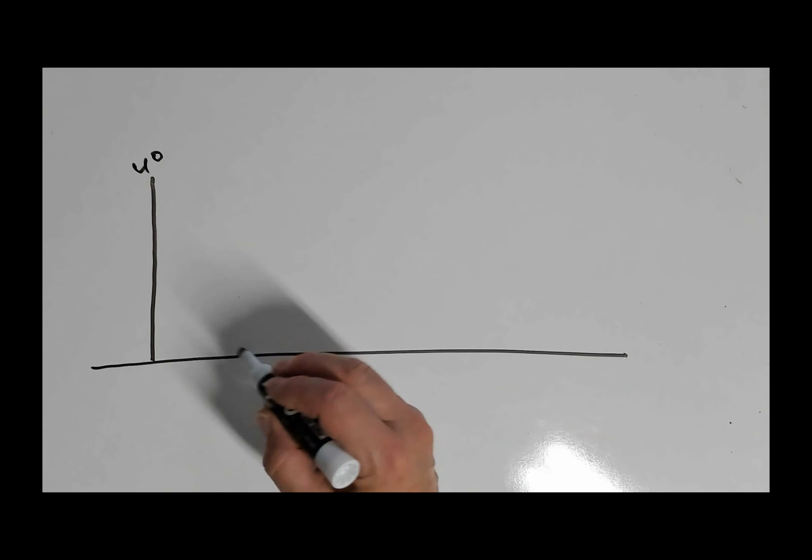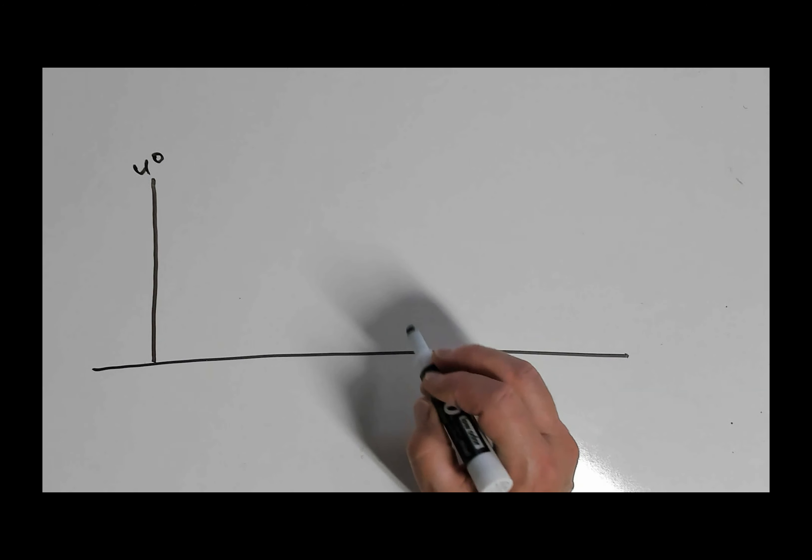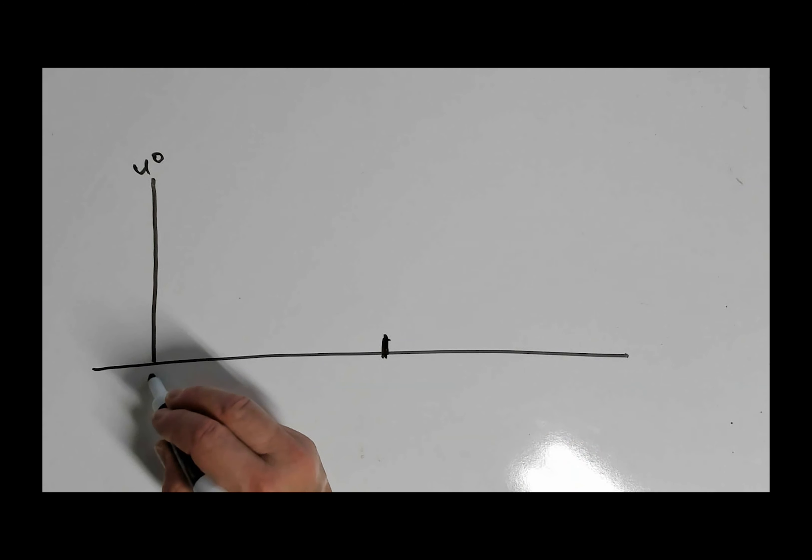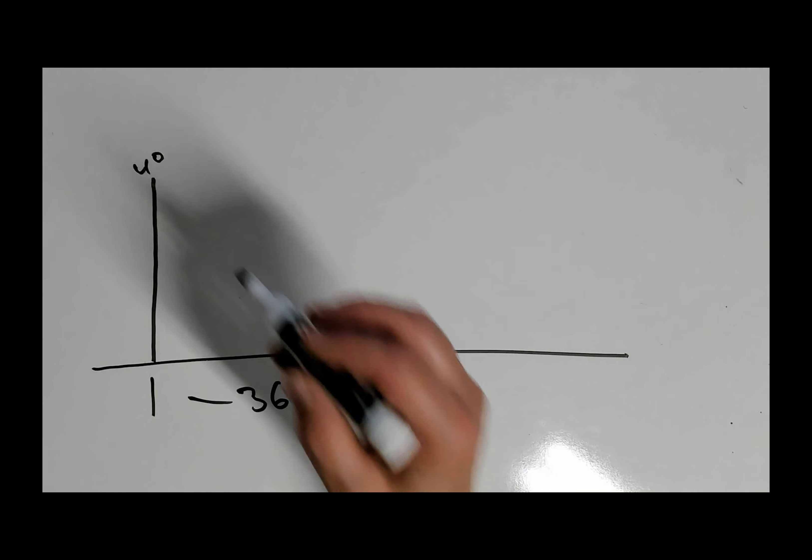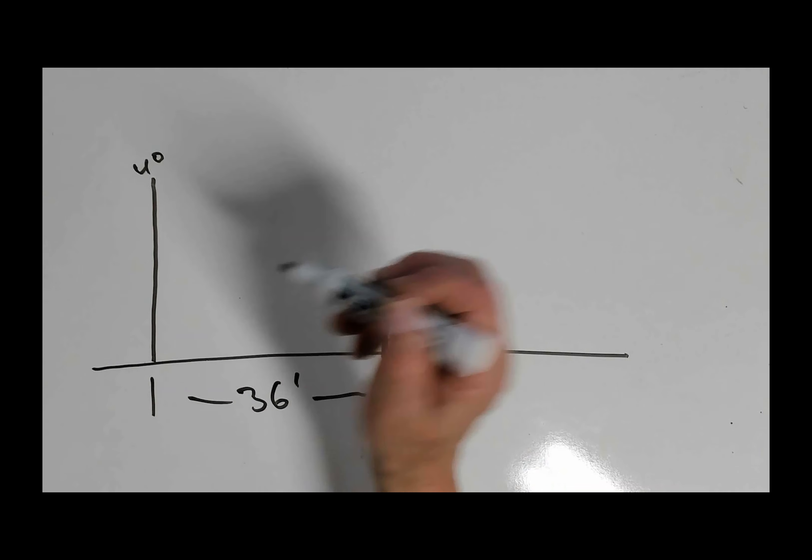And we figure out that we're going to put our guy line anchor about 36 feet away right here. This is not drawn to scale. So we have our anchor here and our mast here. So from there to there is 36 feet.